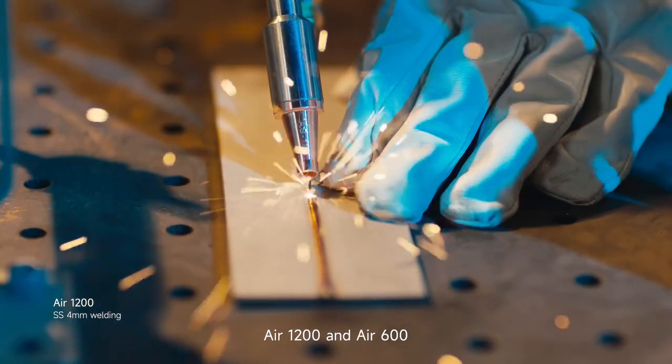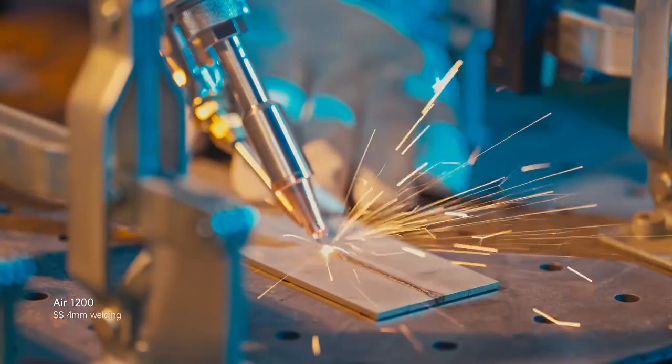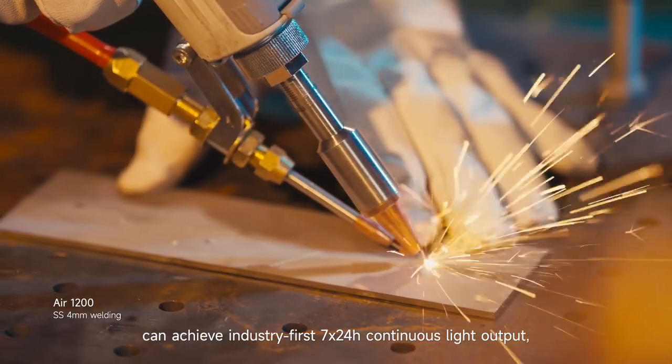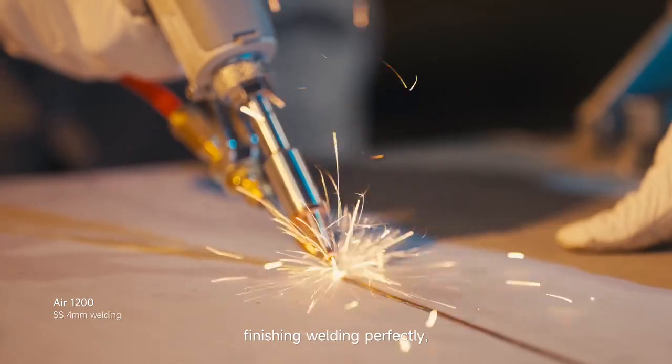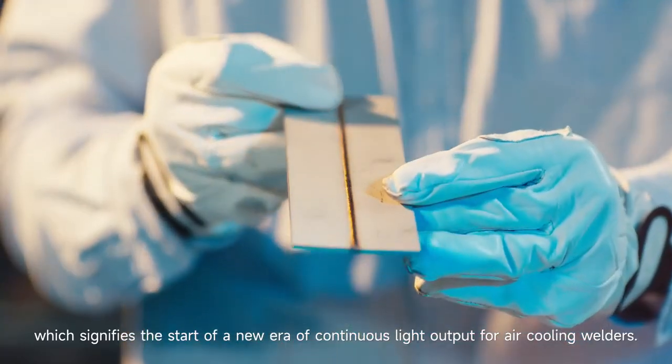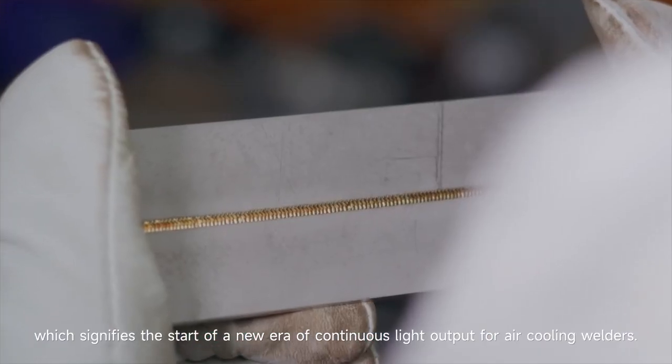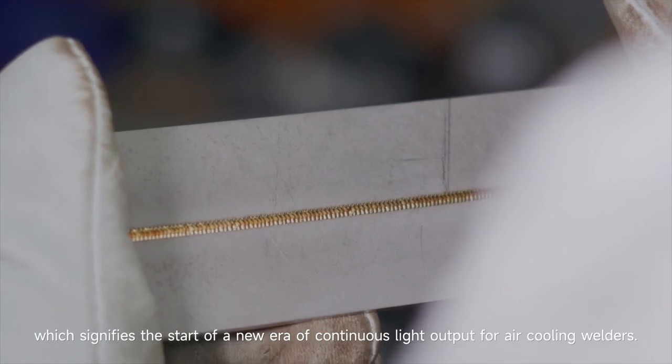Air 1200 and Air 600 can achieve industry-first 724 hours continuous light output, finishing welding perfectly, which signifies the start of a new era of continuous light output for air cooling welders.